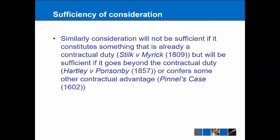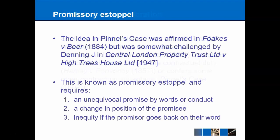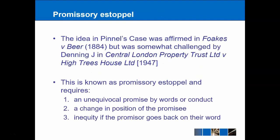For example, if I owe someone £10 and have to pay them back by Wednesday, but I can pay £8 by Tuesday, that might actually be more advantageous to them — they get less money but get it quicker. That idea from Pinnel's Case was affirmed in Foakes v Beer from 1884, where the court found in favour of the person who was owed the money in that situation.